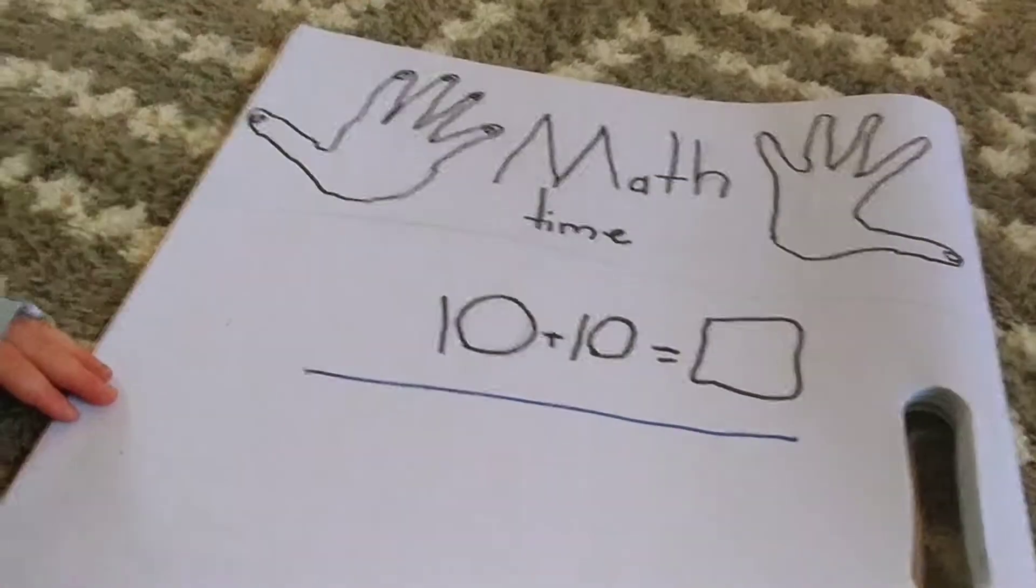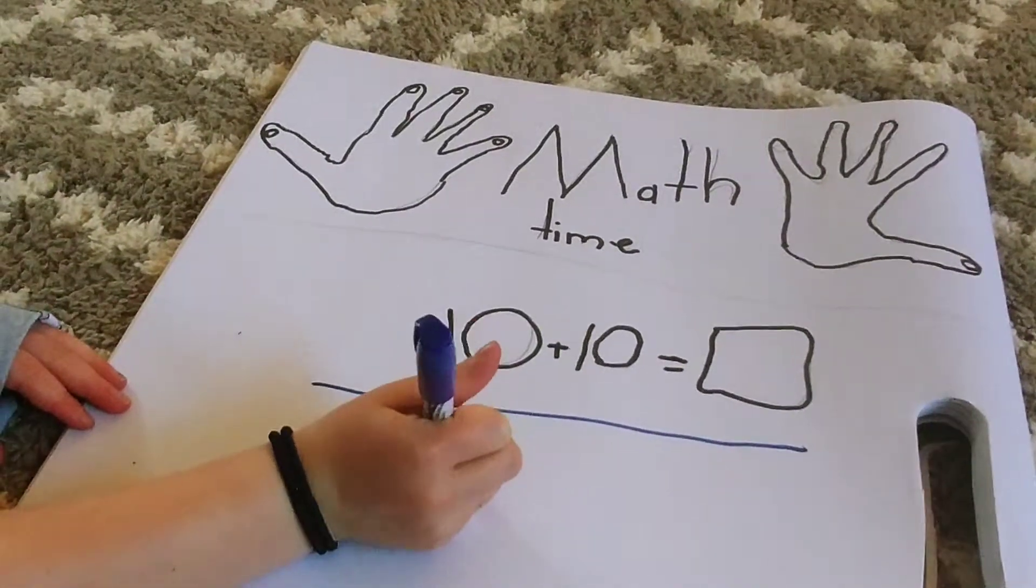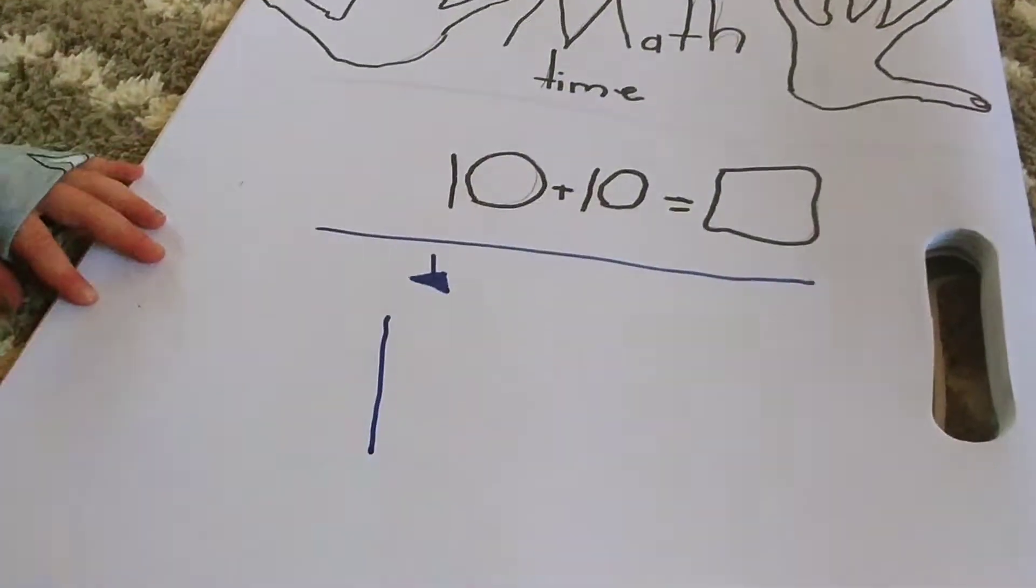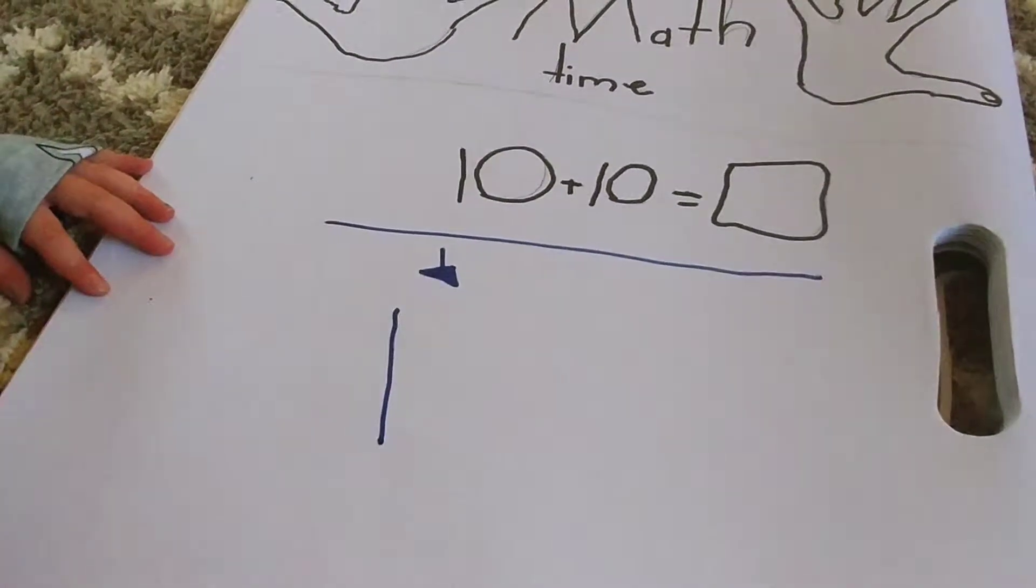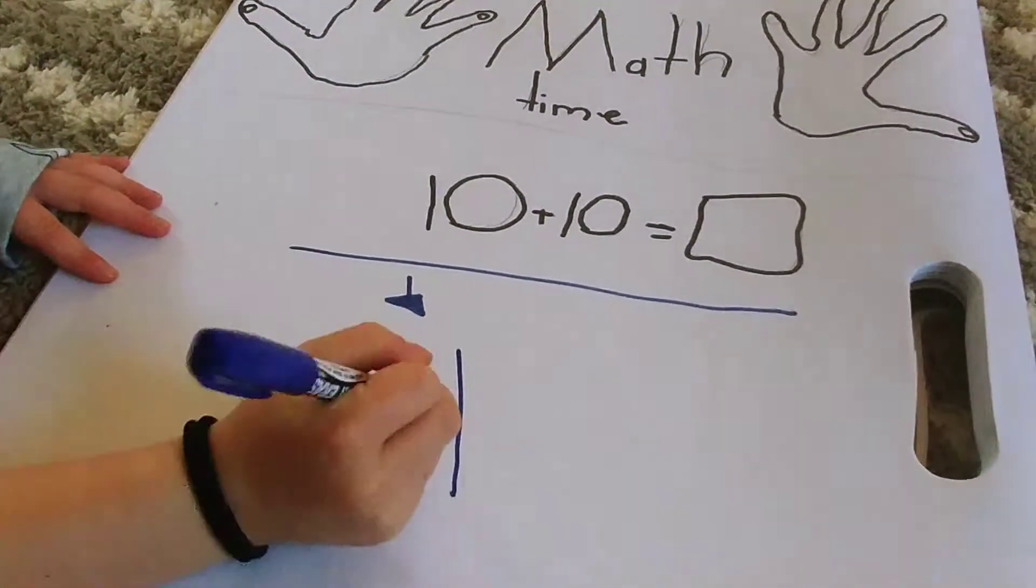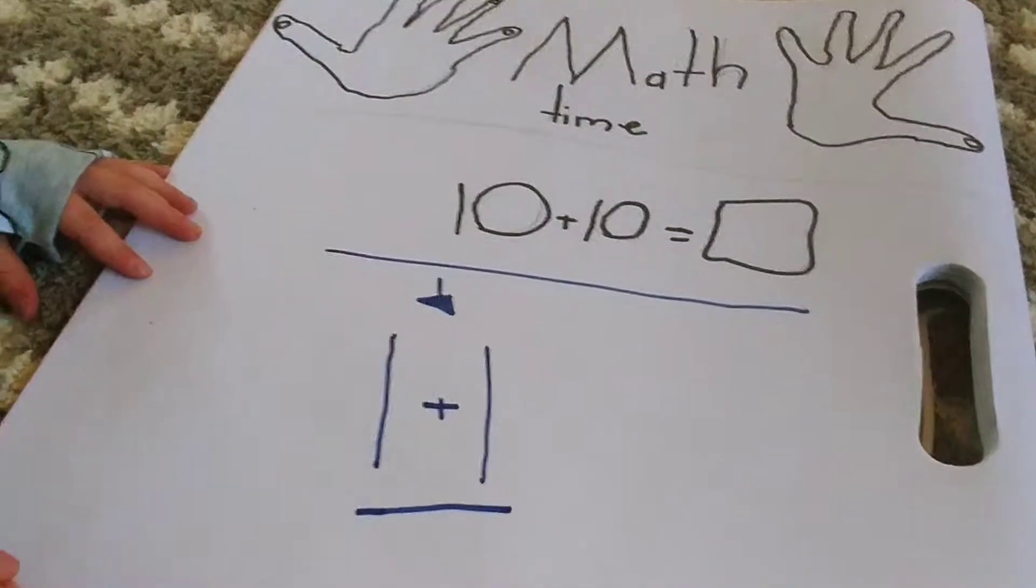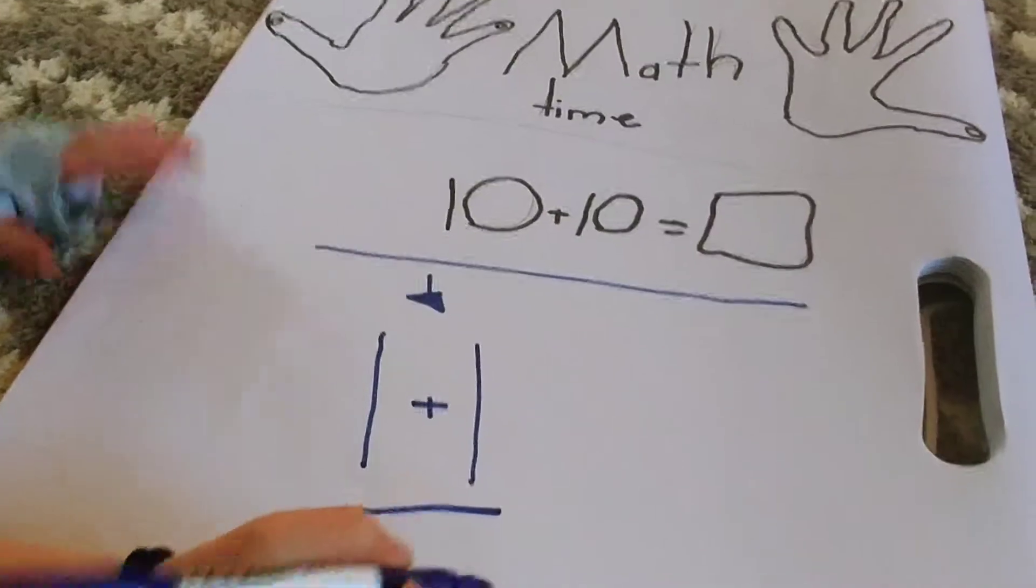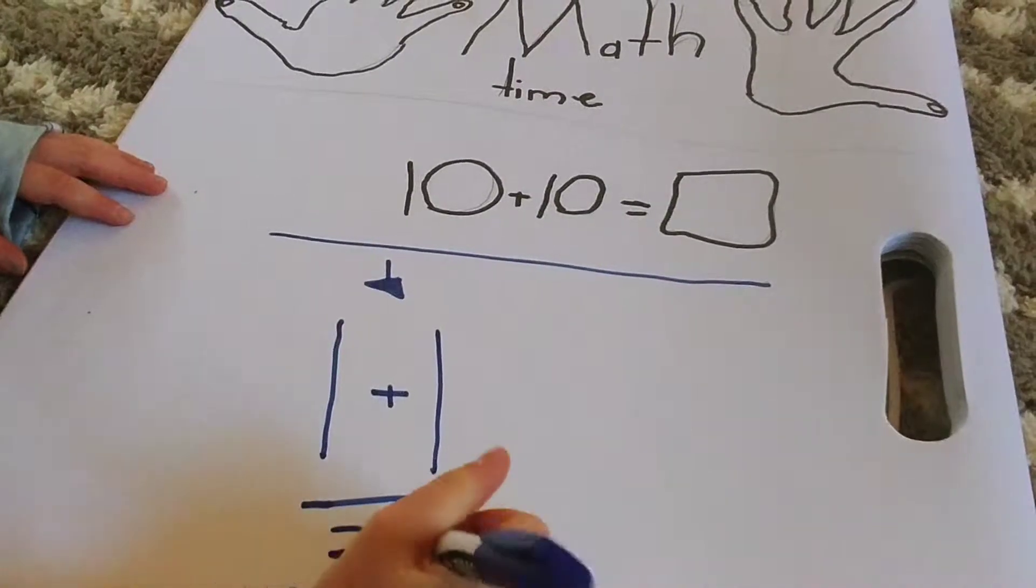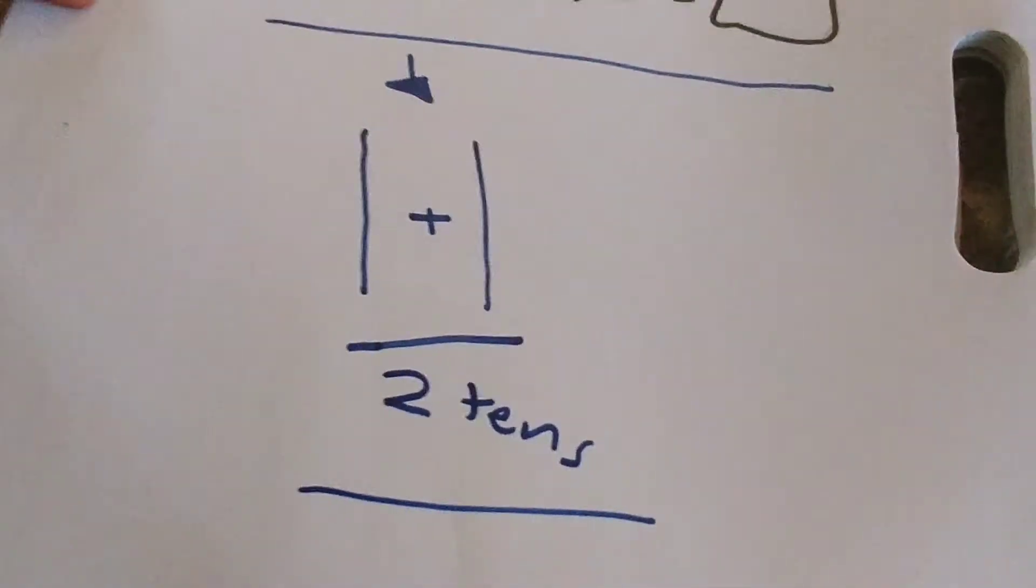First, we are going to do our strategy. I'm going to do base 10. You need one more for one 10 because there's zero ones, and then 10 plus 10. So two, and add these. How many tens are there all together? Can you tell me? Two, that's right.